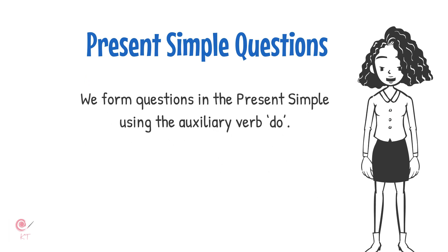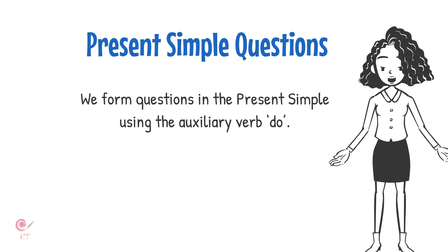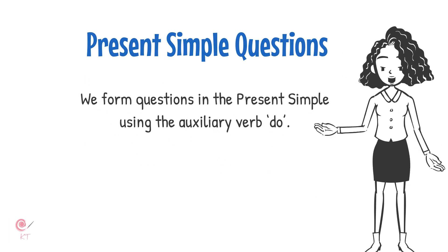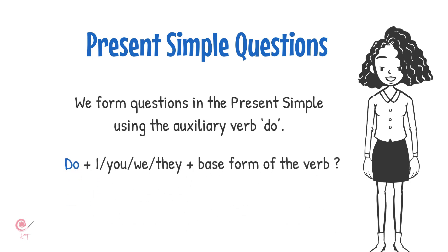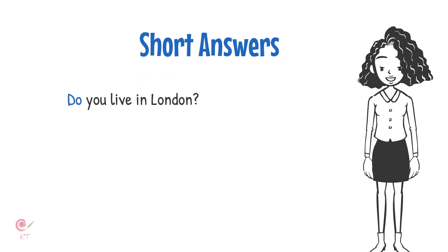We form questions in the present simple using the auxiliary verb do. Do you live in London? Yes, I do. No, I don't.